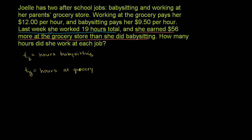They tell us she worked 19 hours total, so that statement says the sum of these two is going to be 19. So the time babysitting plus the time at the grocery store equals 19 hours. We need another constraint — she earned $56 more at the grocery store than she did babysitting.